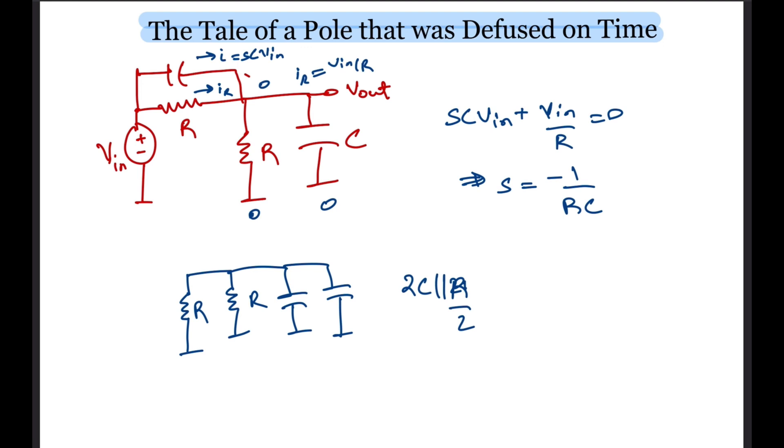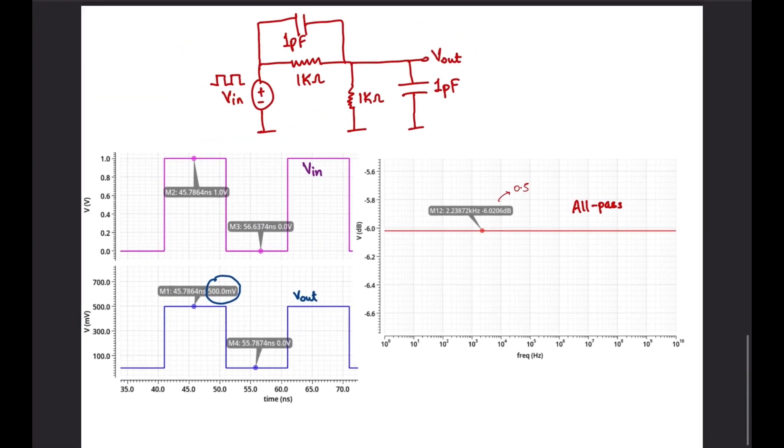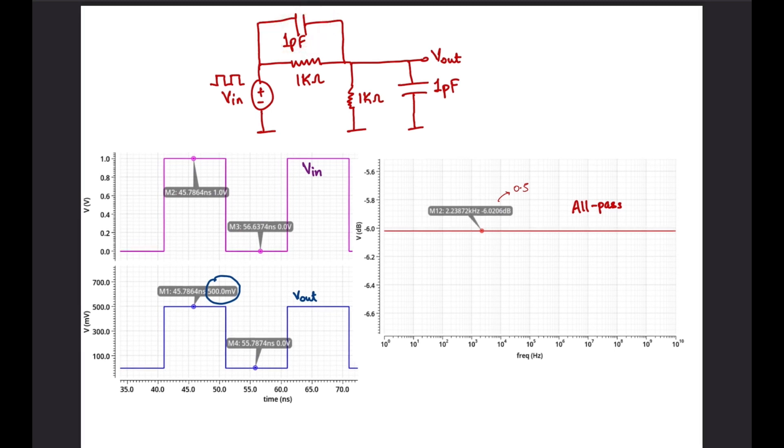The nerdy lot of you can actually do the whole hand analysis and calculate the transfer function to see that we get an all-pass response. I have attached the corresponding simulation as well. It will be interesting for you to ponder over what will change if I change the values of one of the resistor from R to 2R. A hint would be to think in terms of the limits, when the caps are shorted and when they are open.